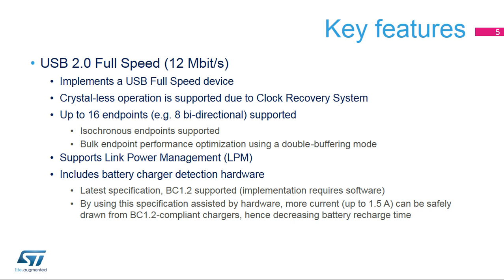Let's look at some of the key features of this USB Full-Speed Interface, which is a USB 2.0-compliant interface that operates at a 12 megabit per second bitrate. A USB FS device can be implemented. Crystal-less operation is supported. A total of 16 endpoints, 8 bi-directional, can be supported. Full support for isochronous endpoints is included. Bulk endpoints are able to use a double-buffering mode offering higher performance. In-built support for Link Power Management adds enhanced power modes on top of the USB 2.0 specification.